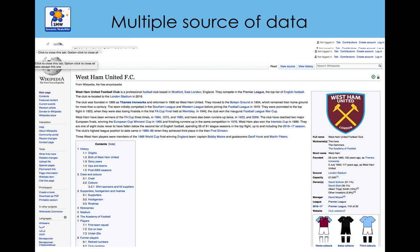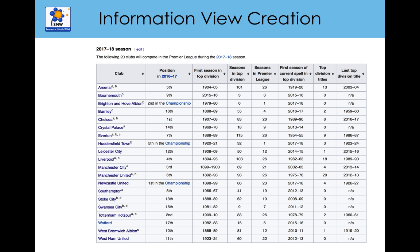This is what Semantic Media Wiki allows you to do. It allows you to turn that information into data so it can be read by a computer, and then you can create queries to extract that information. Looking at another information view within Wikipedia, somebody has actually created a table by typing it out — working out the position that every club came in last year. If those pages were stored in Semantic Media Wiki, you would be able to automatically generate this table or any other tables or queries, depending on the data you've collected.